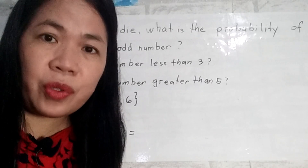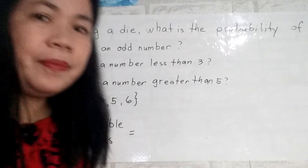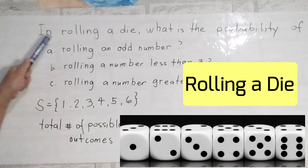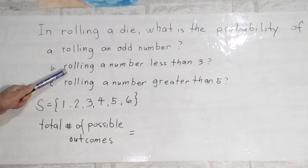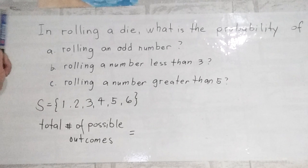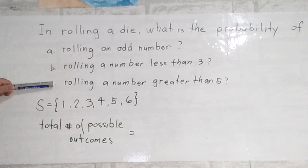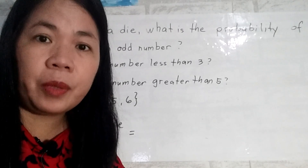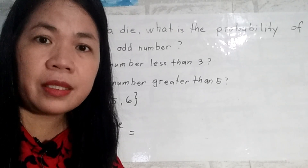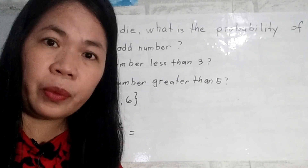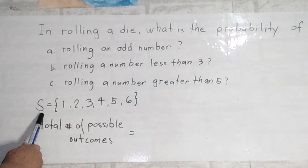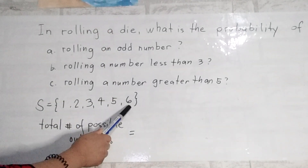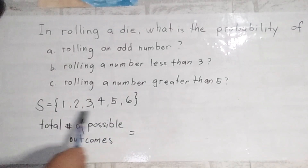Let's now solve some probability problems. Number one — in rolling a die, what is the probability of rolling an odd number? What is the probability of rolling a number less than 3? And what is the probability of rolling a number greater than 5? In rolling a single die, the sample space is S = {1, 2, 3, 4, 5, 6}. There are 6 possible outcomes in this experiment, so the total number of possible outcomes is 6.